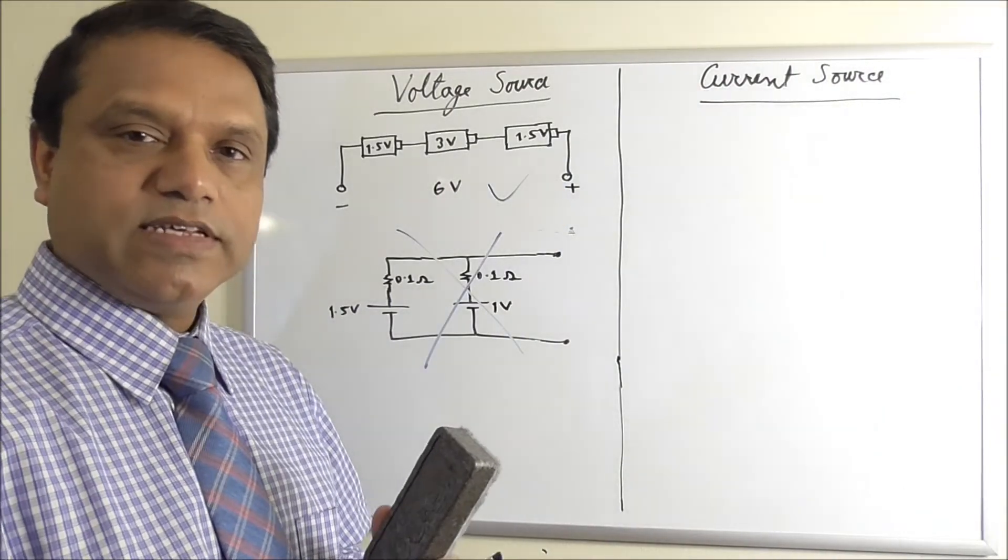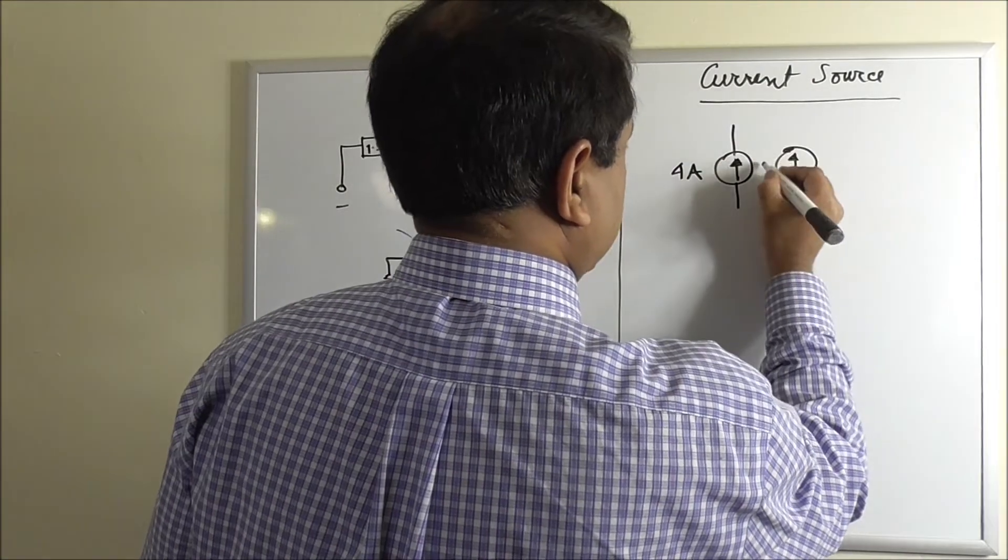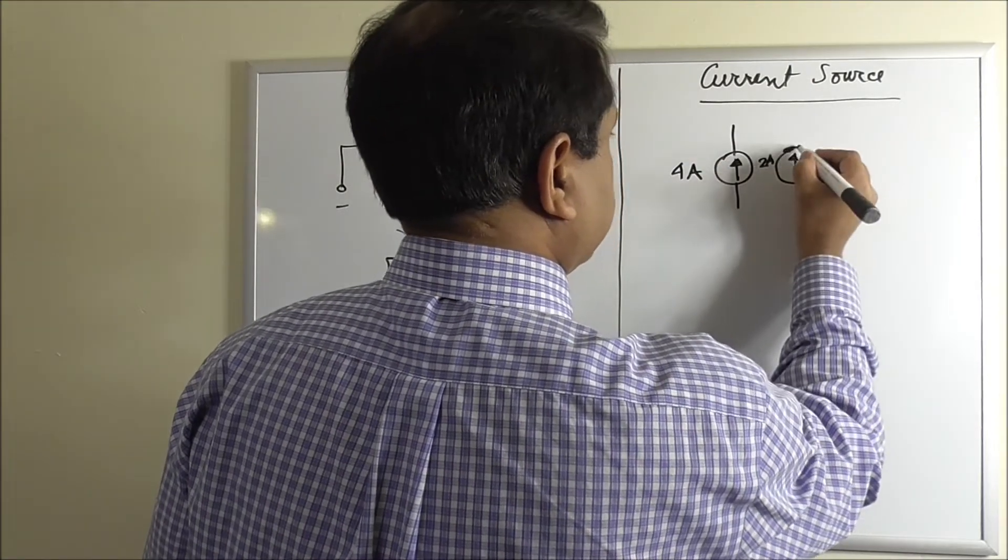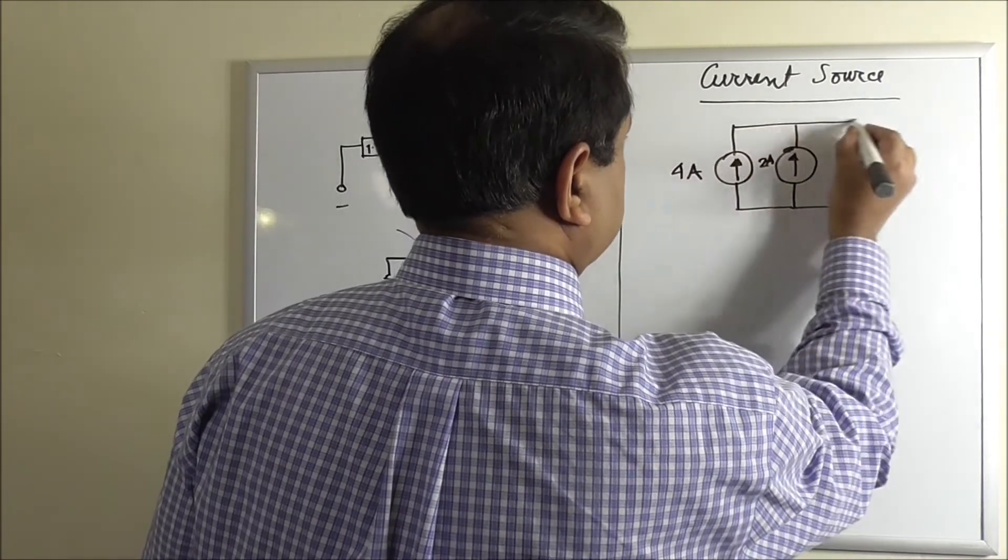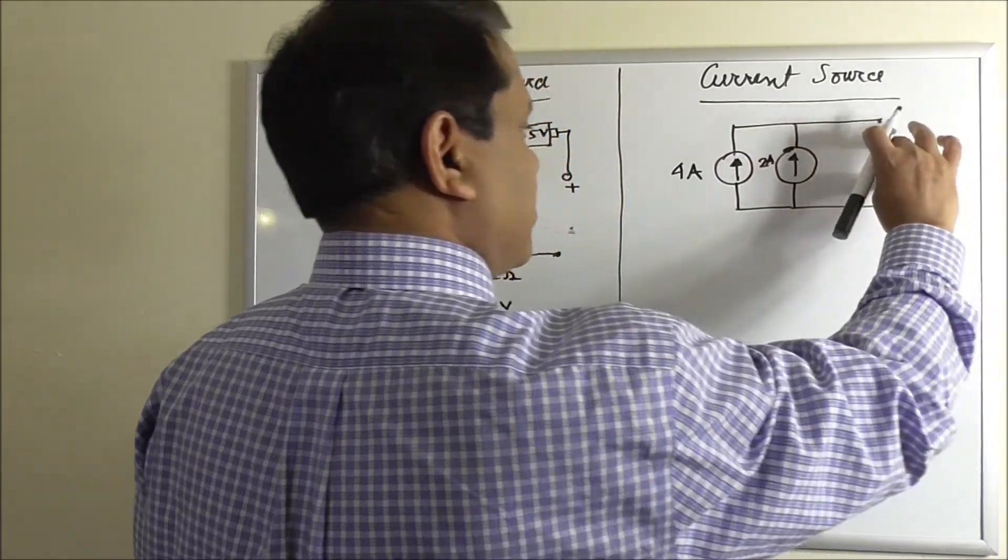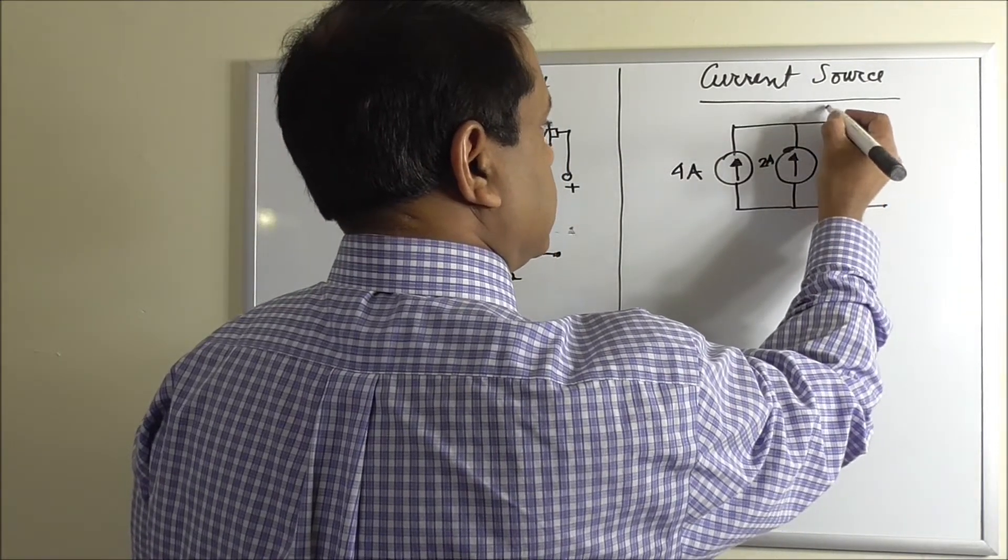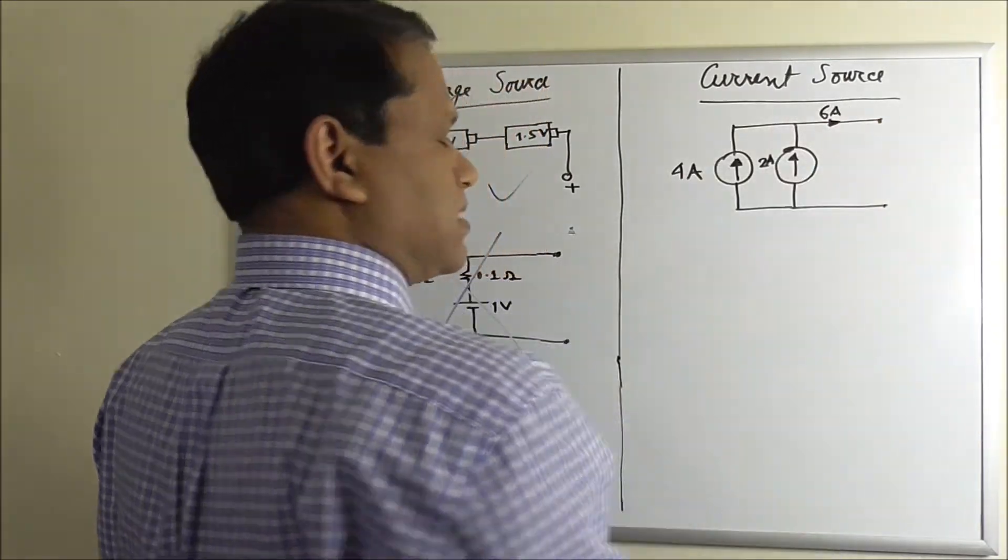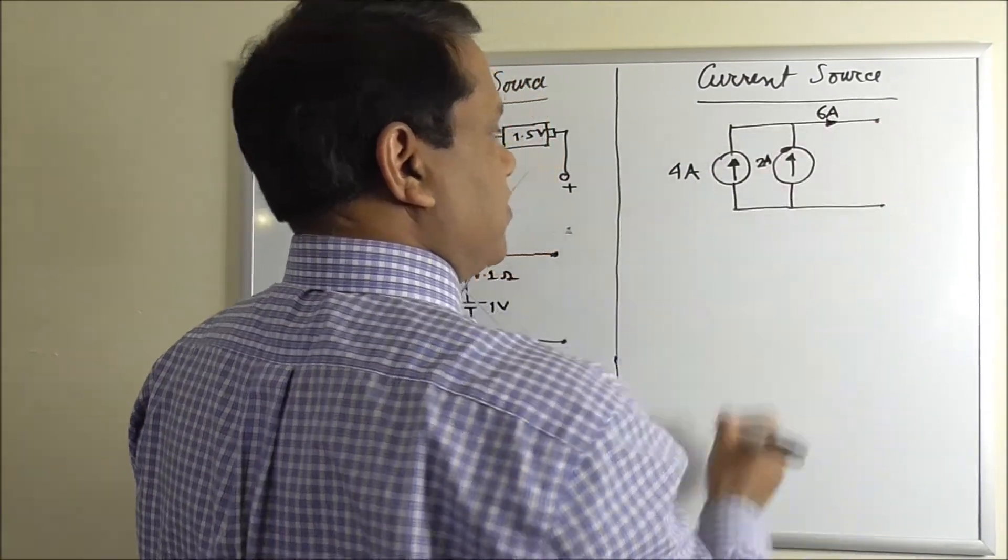This is okay. You can put current sources in parallel but not in series. And source, this is 2 ampere. If you apply a load here it will get 4 plus 2, 6 ampere. So that's fine. But you cannot put them in series.